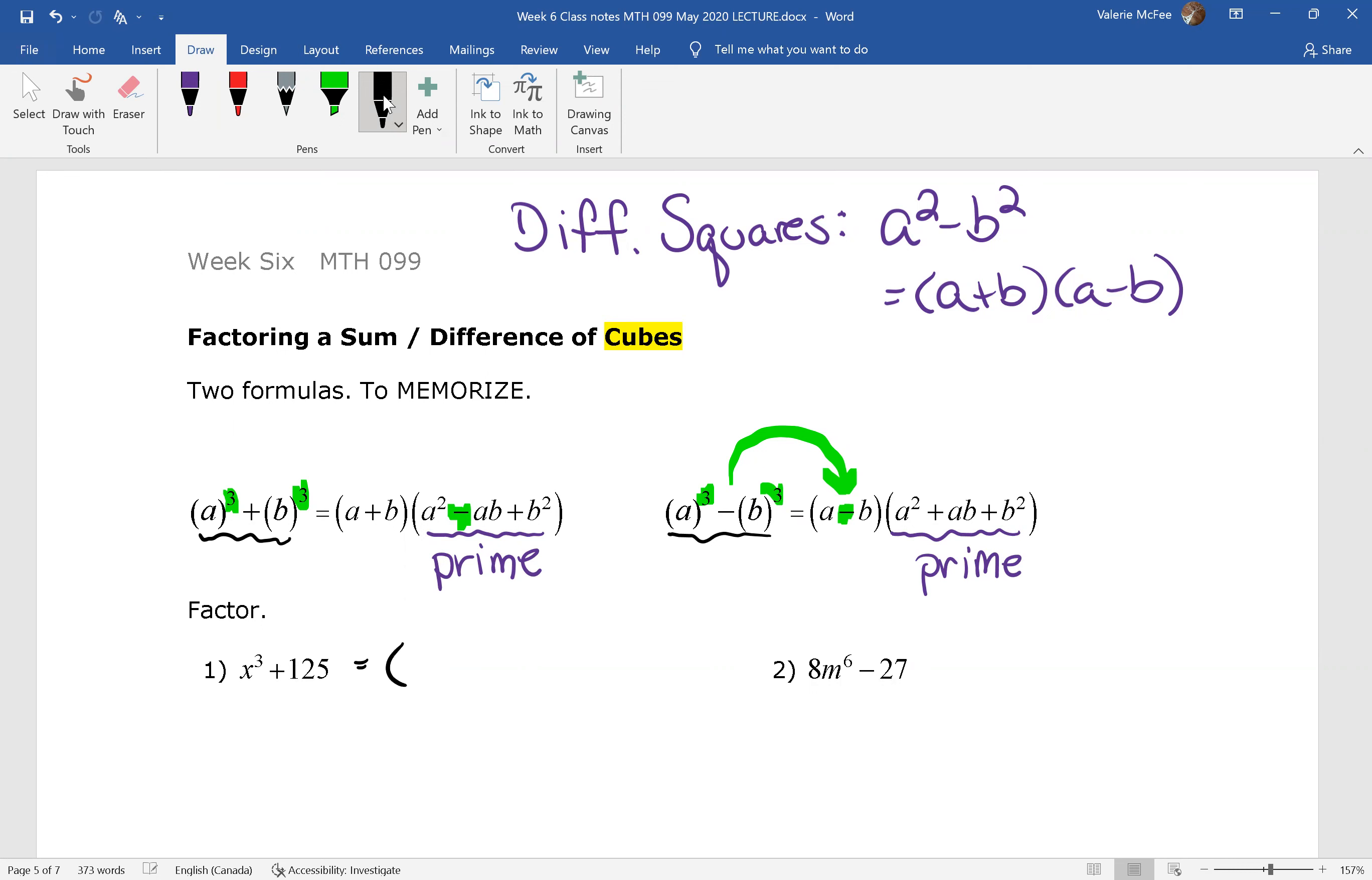So if we look at question one, we have x³ + 5³. Now we see a is equal to x and b is equal to 5. And we're going to use that formula for a sum of cubes. So the formula starts with a + b, x + 5.